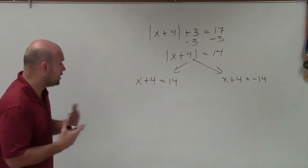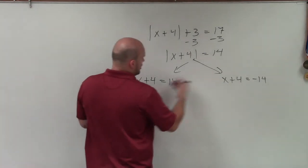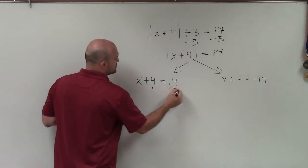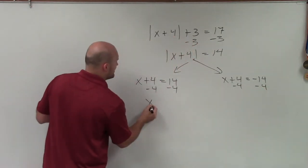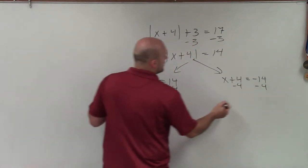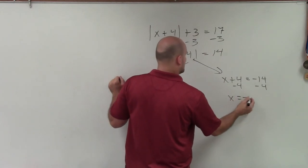Now, ladies and gentlemen, all I'm going to do is solve my one-step equations. I'll subtract 4 on both sides. Therefore, I have x equals 10 and x equals negative 18.